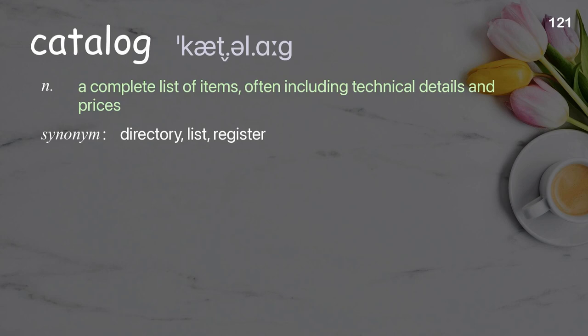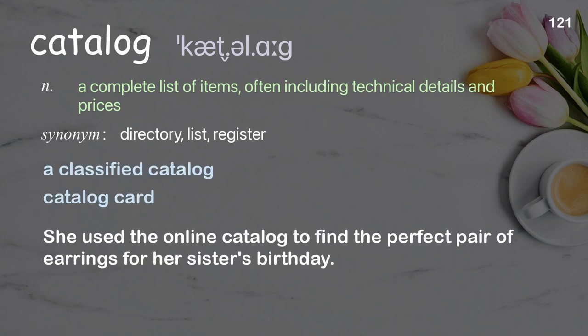Catalog: a complete list of items, often including technical details and prices. Examples: a classified catalogue, catalogue card. She used the online catalogue to find the perfect pair of earrings for her sister's birthday.